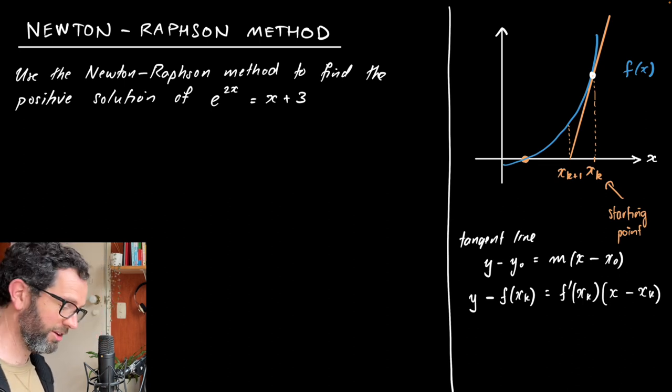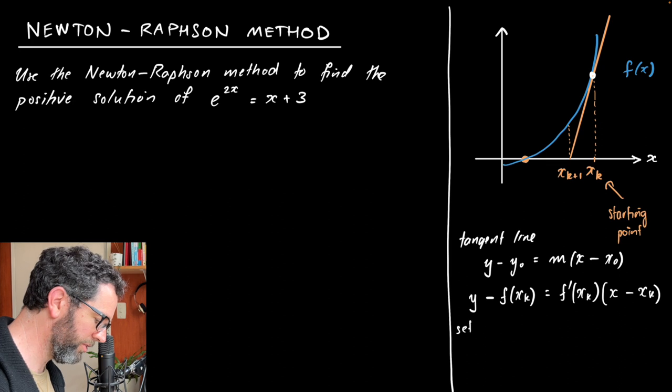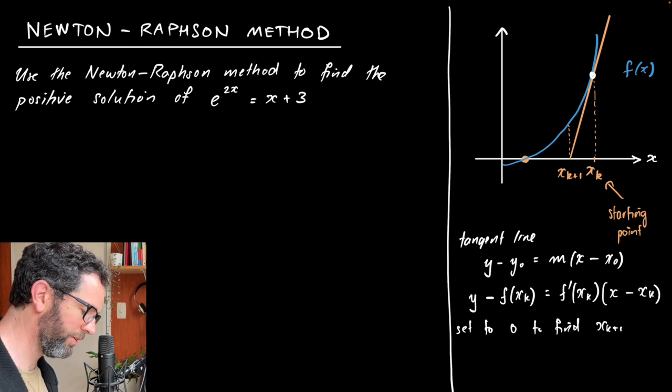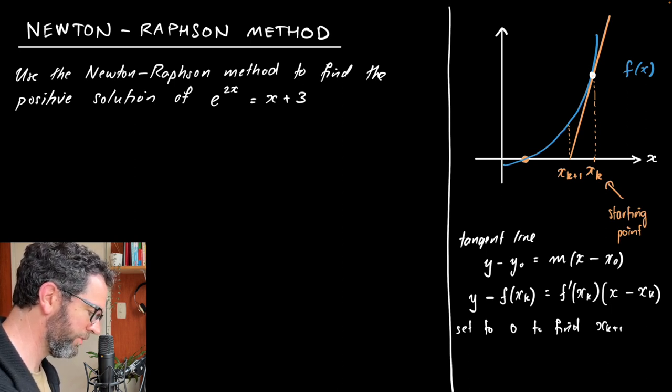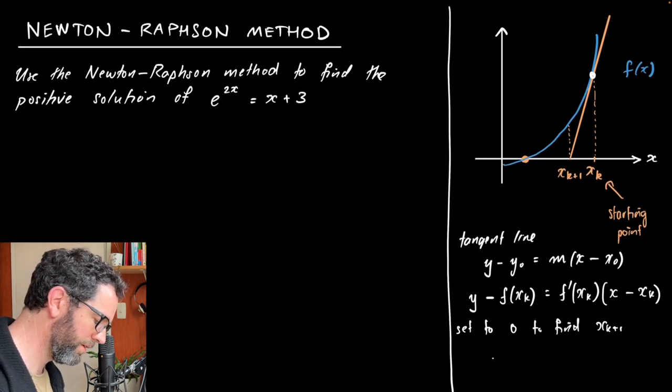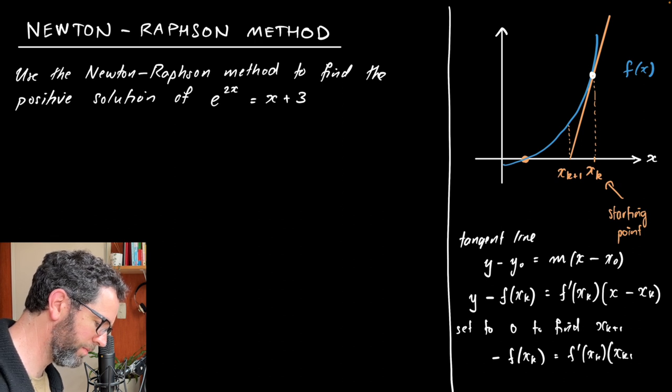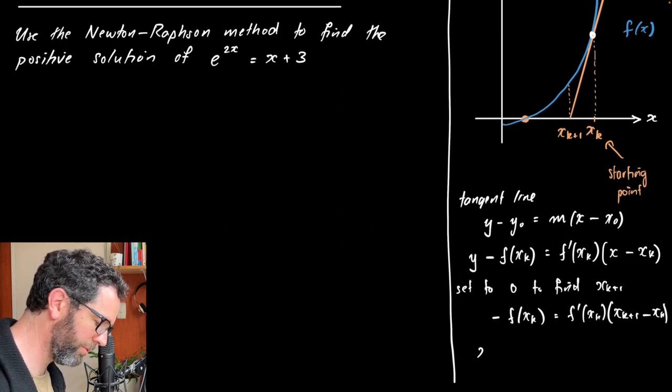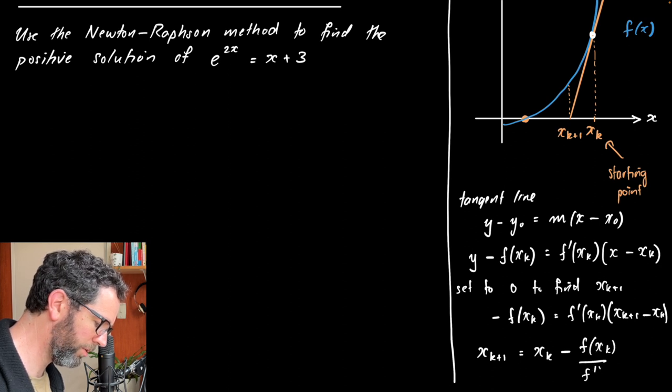That's the equation for our tangent line. And set it to zero to find xk plus one. So that means we're just going to make y equal to zero, and we're going to make x into xk plus one. So we'll get, y is going to be zero, so negative f of xk is equal to f prime of xk. And x is going to be xk plus one. That's going to be the intersect value, xk. And if we just rearrange this slightly, we get our Newton update formula which says that this xk plus one value is just equal to xk minus f of xk over f prime of xk.